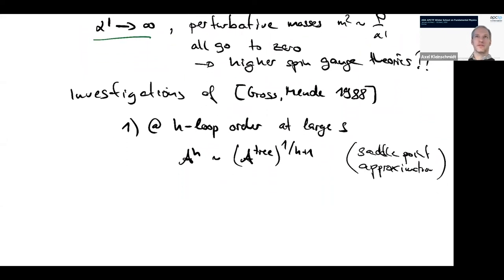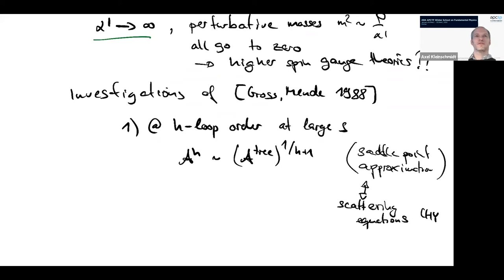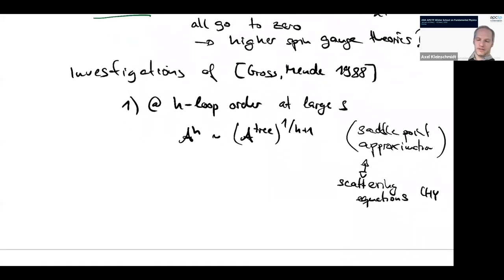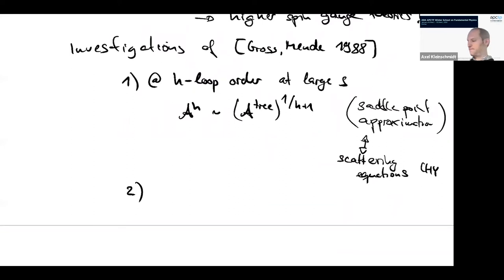This is something you get from a saddle point approximation to the path integral. If you look at the saddle point equations, they have resurfaced afterwards in a different context: these are the equations now known as the scattering equations, or the CHY formalism — something mentioned in a question a couple of days ago. The equations you get in the CHY formalism turn out to be exactly the same equations that determine the saddle point. This allows you to find the relation for the higher genus amplitude, giving a very nice and universal structure for these amplitudes at large energies as you change the loop order.